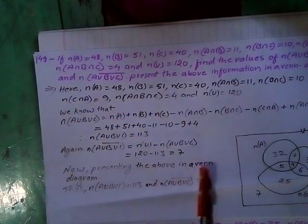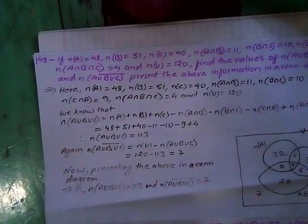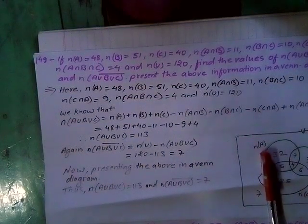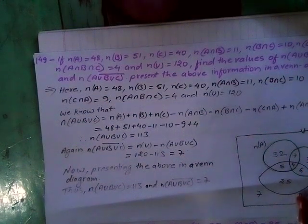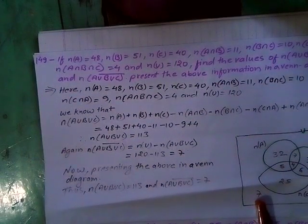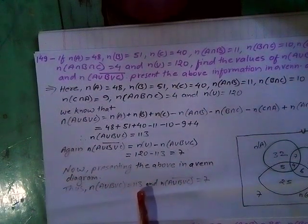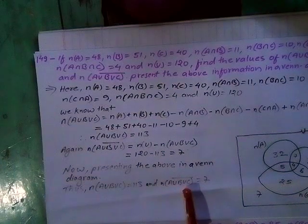Presenting the above in a Venn diagram: the big box denotes N U, the first circle denotes N A, the second N B, the third N C. Only A is 32, only B is 34, only C is 25. The complement of all three sets is 7. Thus N A union B union C equals 113 and N A union B union C complement equals 7.